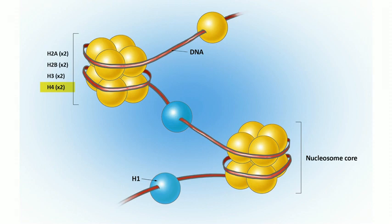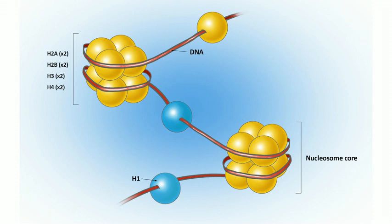The core histones are H2A, H2B, H3, and H4 — two of each for a total of eight histones. These histone proteins consist of a lot of lysine and arginine, making histones positively charged. That positive charge makes it easy for histones to associate with DNA, which is negatively charged because of its phosphate groups.